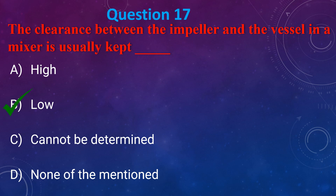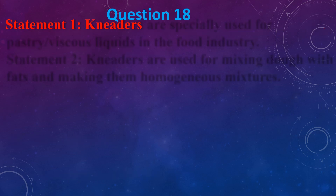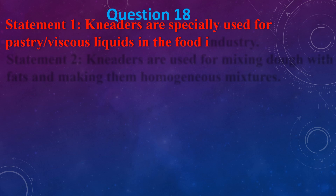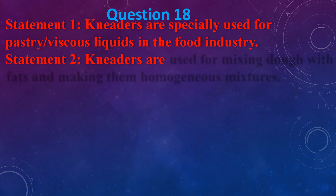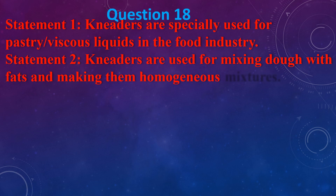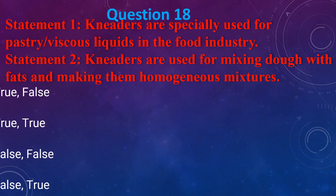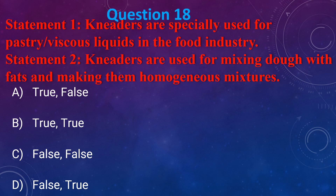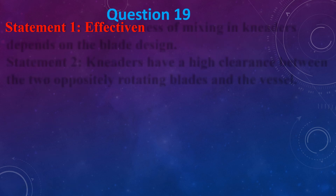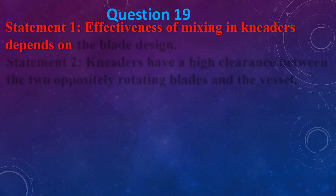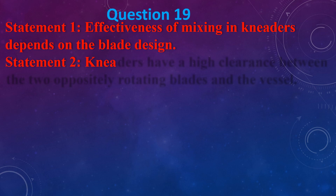The clearance between the impeller and the vessel in a mixer is usually kept: (a) High, (b) Low, (c) Cannot be determined, (d) None of the mentioned. The answer is (b) low. Statement 1: Kneaders are especially used for festive and viscous liquids in the food industry. Statement 2: Kneaders are used for mixing them with fat and making them a homogenized mixture. The answer is (b) both statements are true.